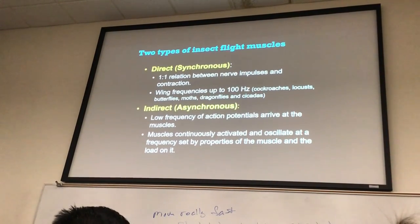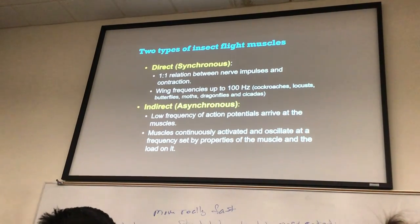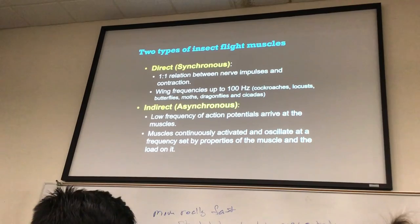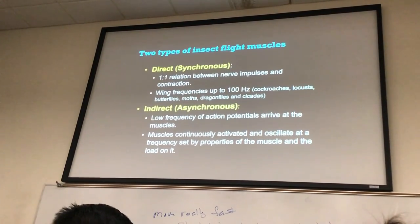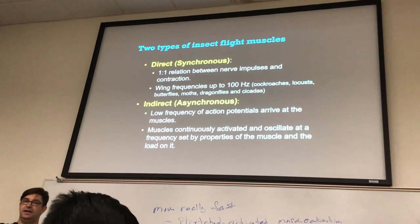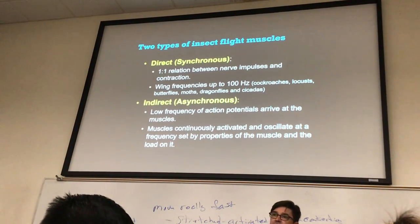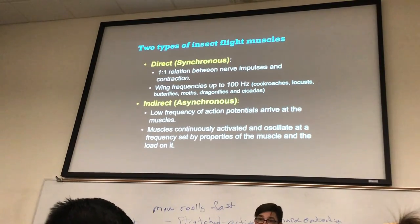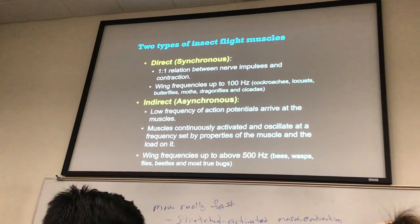Stretch-activated muscles can actually contract at a faster frequency than sonic muscle fiber types because they're not dependent upon an action potential. An action potential requires a lot: multiple neurons, neurotransmitters binding to receptors, generating a potential at the axon hillock, sodium-potassium pumping, releasing the next neurotransmitter — all of that takes time. If you eliminate all that, the muscles can contract at a much faster rate. Here we can have wing beat frequencies above 500 hertz — bees, wasps, and most true bugs.